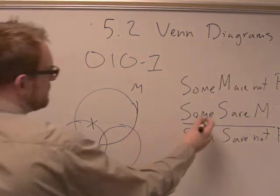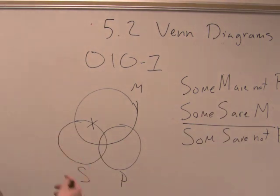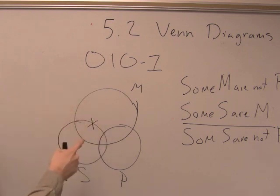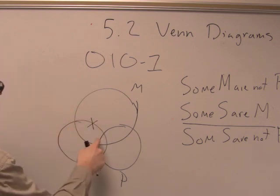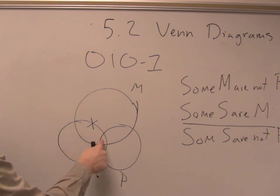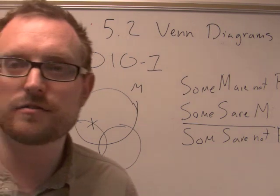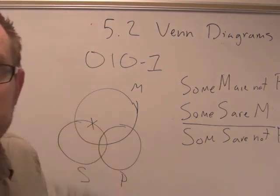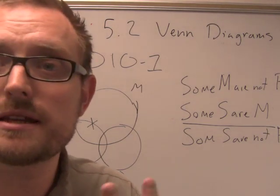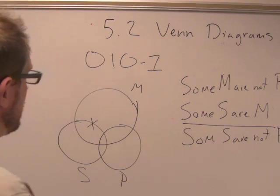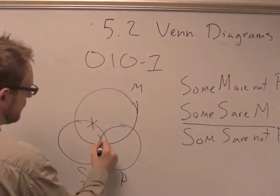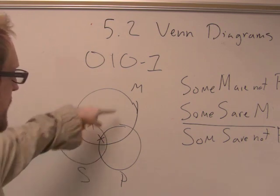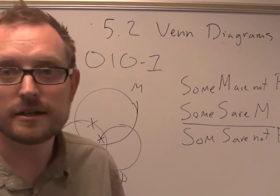So then the next one is that some of the S's are M's. So some S are M's, so we know there has to be another X in here. But the question is, where do we put it? Do we put it here, or over here? Well, in the same sense as our first X, we don't know whether or not some of the S's that are M's are also included in the P class, which means we have to represent that uncertainty. So we put it right here on the line.